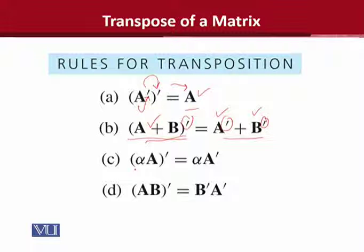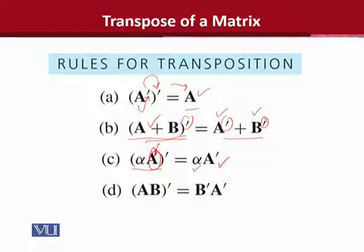Then, for a scalar multiplied by a matrix, the transpose can be applied to the matrix only — it does not apply to the scalar or numerical value. So whether you multiply the scalar first and then take the transpose, or take the transpose first and multiply the scalar after, the answer will be the same. Scalar has no effect on the transposition. This was the third rule.